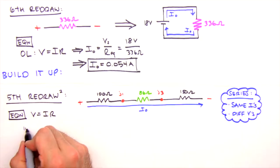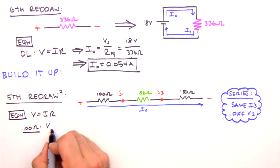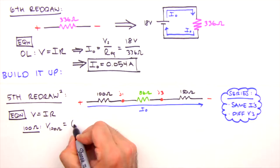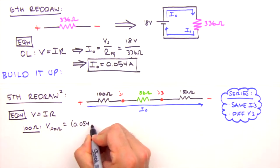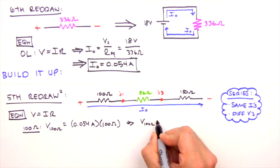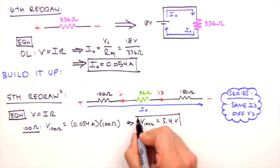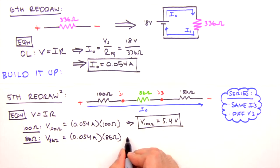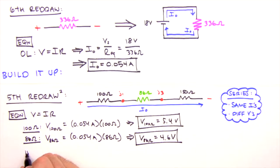So, for the 100 ohm resistor, we apply Ohm's law and we get the voltage across the 100 ohm resistor equals the current through the resistor, which is I0, that's 0.054 amperes, times the resistance of the resistor, which is of course 100 ohms. This yields a voltage drop across the resistor of 5.4 volts. Now for the 86 ohm resistor, V equals I, that's 0.054 amps, times R, 86 ohms, which equals 4.6 volts. And for the 150 ohm resistor, 0.054 amps times 150 ohms, which equals 8.1 volts.